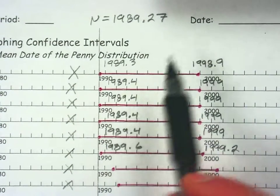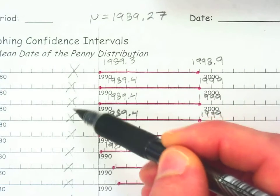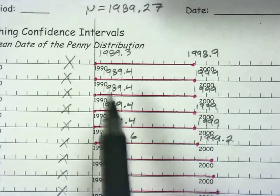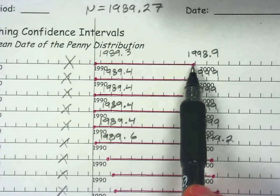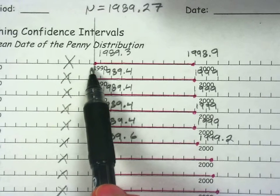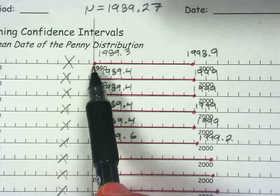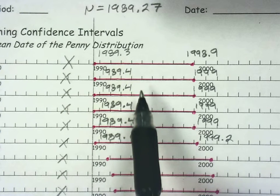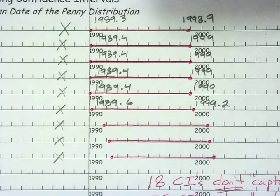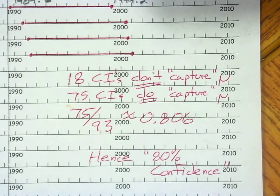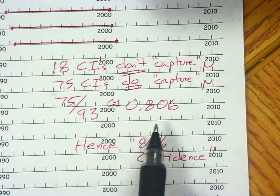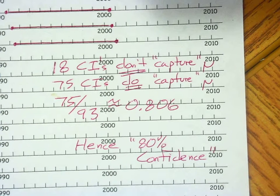At the very end, we had sample means that were so high — nine of them — that when you start at that sample mean and add and subtract the margin of error, we don't capture the truth. The truth is 1989.27; the lower boundary on one of these confidence intervals is 1989.3 — it missed it. So did all of these. The true parameter is below that lower boundary. At 80% confidence, 18 don't capture the truth and 75 did — 75 out of 93 — approximately 80% captured the truth.